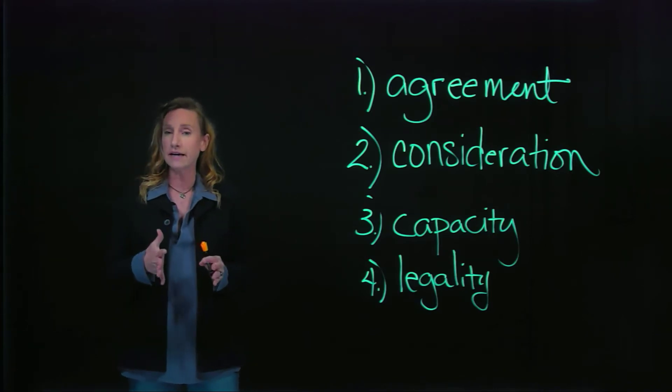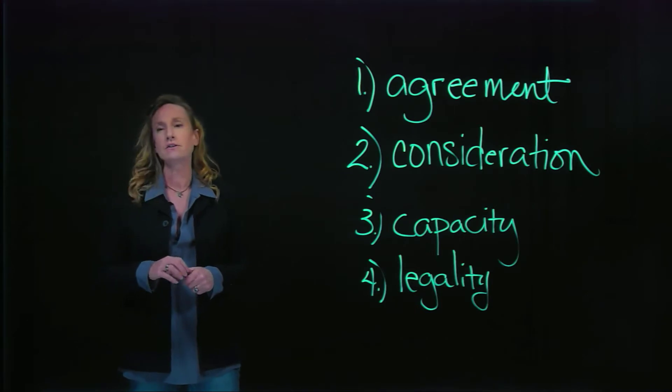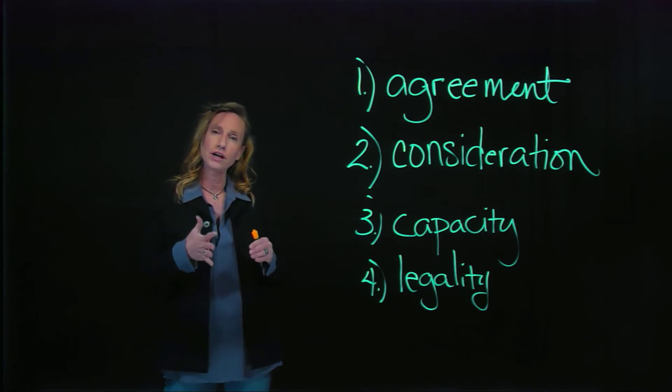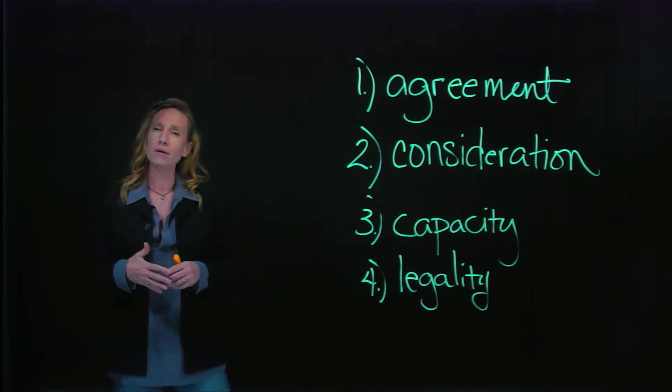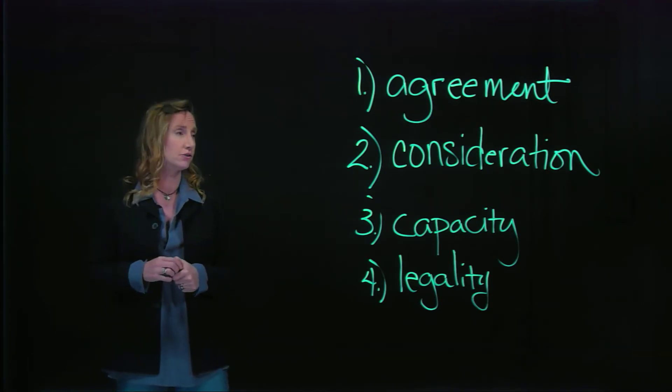Now let's talk about the second element of a contract, and that is consideration. Consideration is referred to as a bargain for exchange, something of value. It requires each party to change their position, either by promising to do something or forego something they have a right to do.